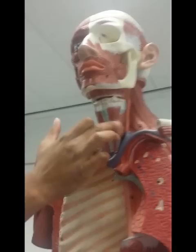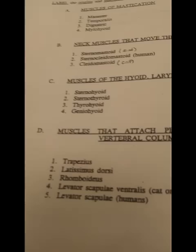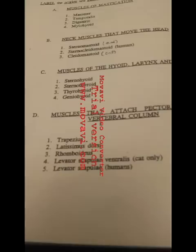The thyrohyoid goes from here to here — from the thyroid cartilage to the hyoid. So sternohyoid, sternothyroid, thyrohyoid — these ones are pretty easy because you can tell exactly where they are just from the name.